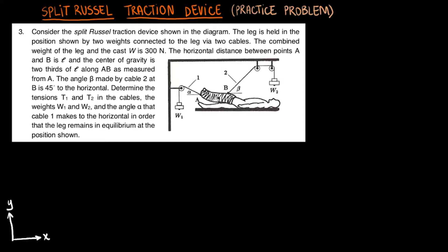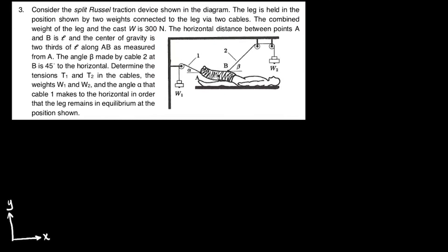Welcome to Split-Russell Traction Device Practice Problem. Consider the split-russell traction device shown in the diagram. The leg is held in the position shown by two weights connected to the leg via two cables. The combined weight of the leg and the cast, W, is 300 newtons.